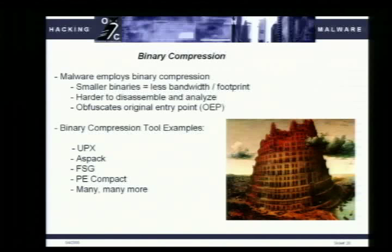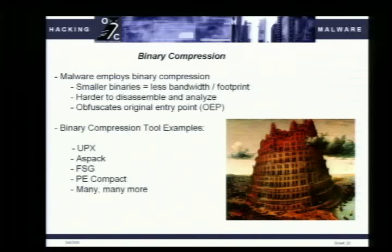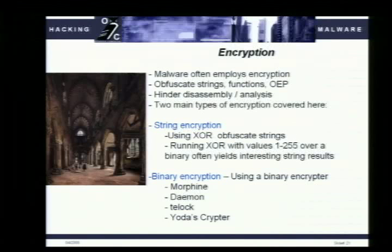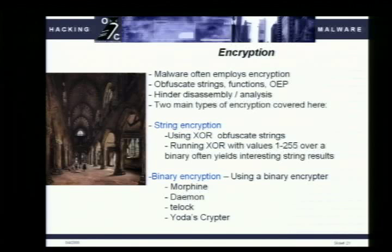Other things malware does besides VM detection: binary compression. Smaller binaries take less bandwidth — really important in worms for fast propagation — and leave a smaller footprint, making it harder to disassemble. There are tons of off-the-shelf packers, and many people write custom packers. Related to this is encryption: a small decoder stub loads at the beginning of the binary and either uncompresses or decrypts itself before execution. This doesn't give a smaller footprint but makes it harder to reverse engineer. There are some legitimate uses like IP protection, but all of it can be broken.